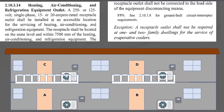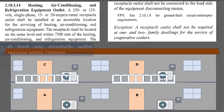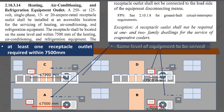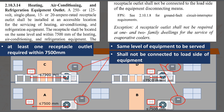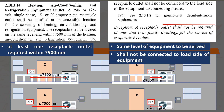Section 2.10.3.14 states that at least one accessible outlet is required for servicing heating, air conditioning, and refrigeration equipment. This outlet must be installed within 7,500 mm from the equipment it serves, and at the same level as the equipment. During equipment repair, the disconnect means will be in the off position for technician safety, so the service outlet must be connected on the line side of the disconnect means, even if connected in the same branch circuit. Evaporative coolers of one- or two-family dwellings are exempted from this section.